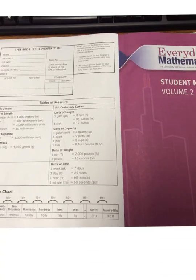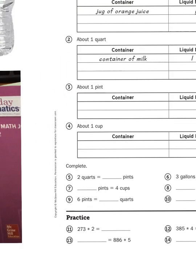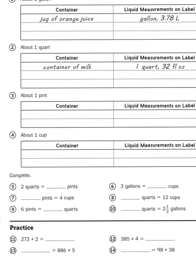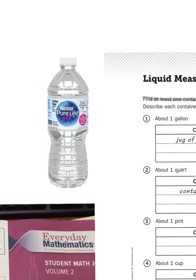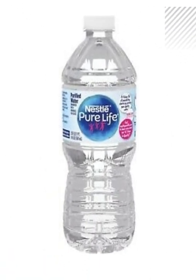Back to the problem at hand: what is an object or a container that would hold about one pint? Well, if you've ever drunk out of one of these things, then you have been exposed to a pint-sized bottle. Water bottles are actually usually 500 milliliters, which is a little bit more than a pint.